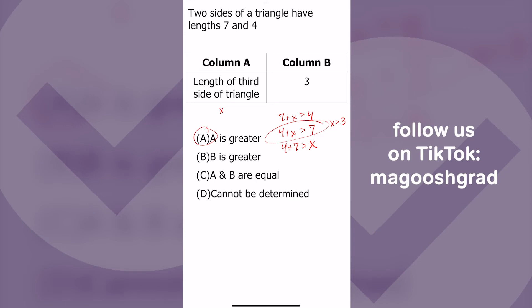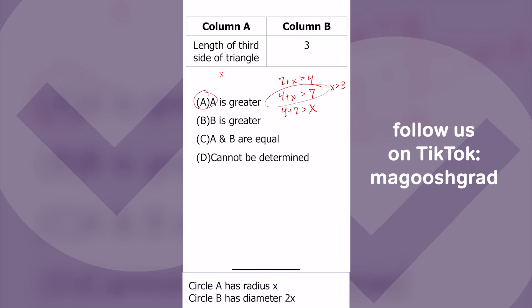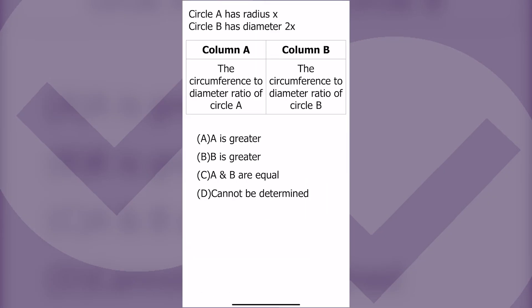If one circle has a radius of x, the other has a diameter of 2x. All we need to do is remember the diameter equals two times the radius. So if that's 2x, it also has radius of x, and these are exactly the same size circle.